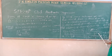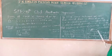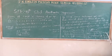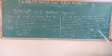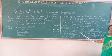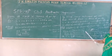Sn is equal to n by 2 into a plus l. This is also a formula. Both these are the formulas. If you know a sub n, you can use that. And since a sub n is also equal to l — the last term — in place of a sub n we can write l also. We can use this formula to find the sum of n terms of an AP.